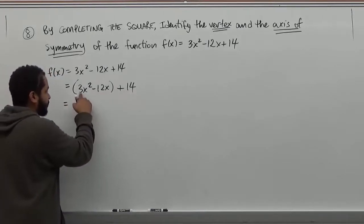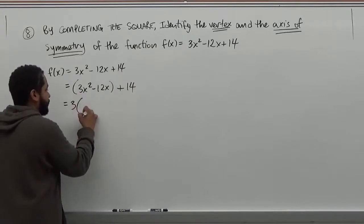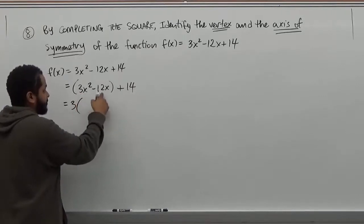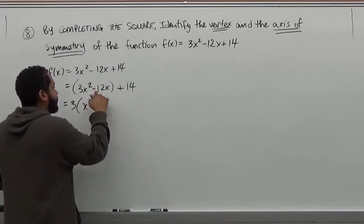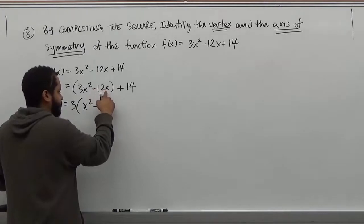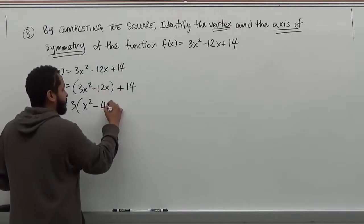So we're going to factor out the 3 of this. And what's left over is we divide both of these terms by 3. In this case, 3x² divided by 3 is just x². And -12x divided by 3 gives us -4x.